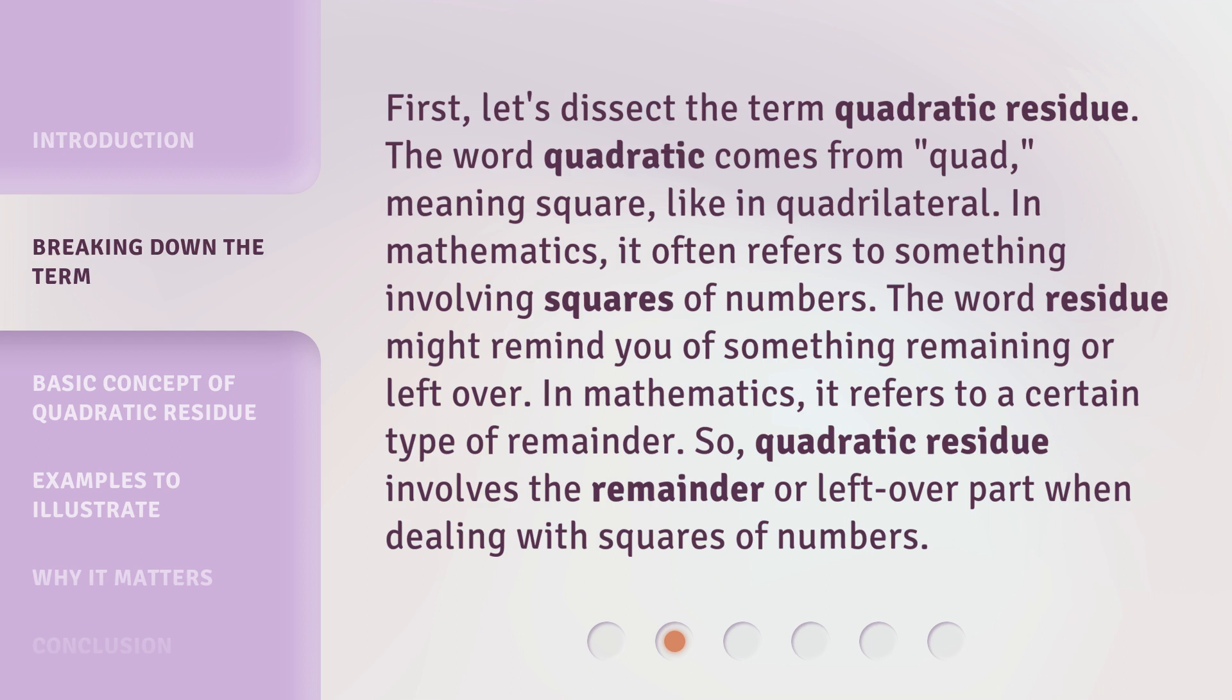In mathematics, it often refers to something involving squares of numbers. The word residue might remind you of something remaining or left over. In mathematics, it refers to a certain type of remainder. So, quadratic residue involves the remainder or leftover part when dealing with squares of numbers.